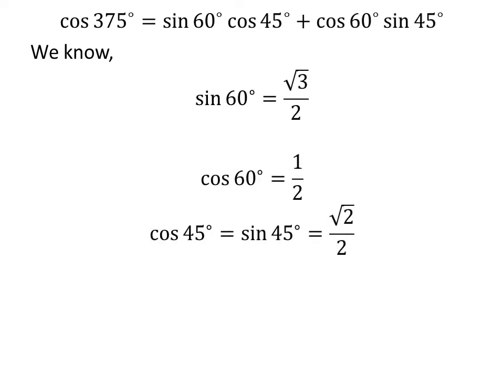As we know, sine of 60 degrees is equal to square root of 3 over 2, cosine of 60 degrees is equal to one half, and cosine of 45 degrees equals sine of 45 degrees equals square root of 2 over 2. So we plug in these values in the above equation.